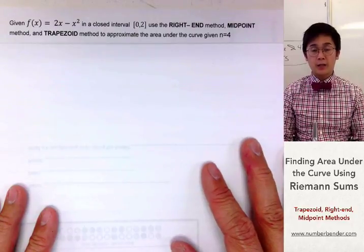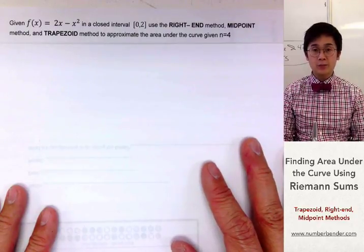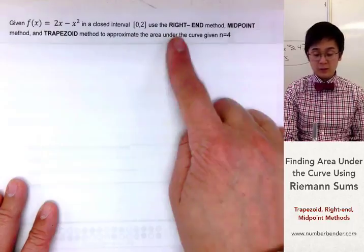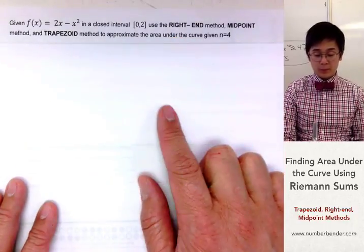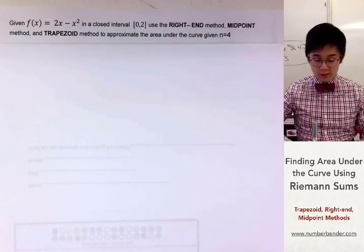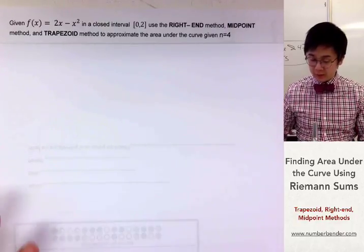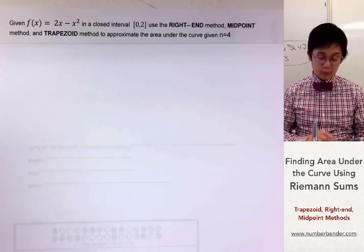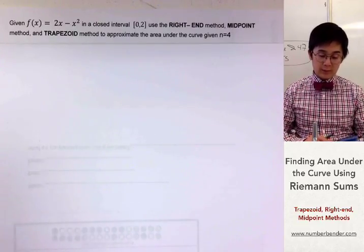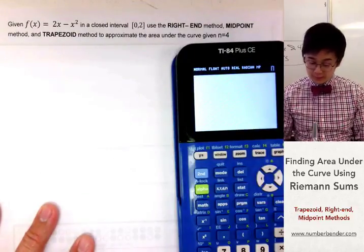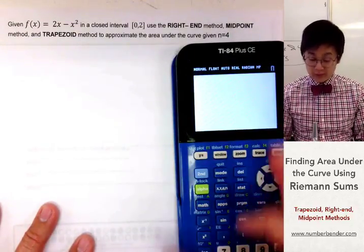Today we're going to be working on approximating the area under the curve using Riemann sums, specifically using the right-end method, midpoint, and trapezoid. We're going to be using the calculator to solve for the approximated value of the area under the curve using TI-84.